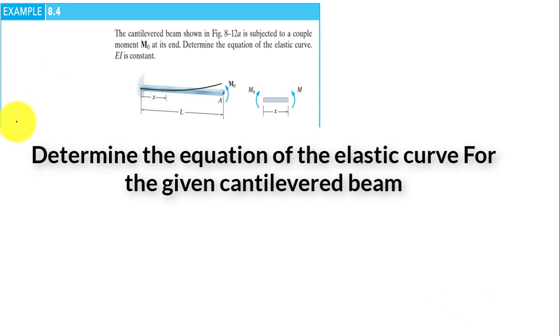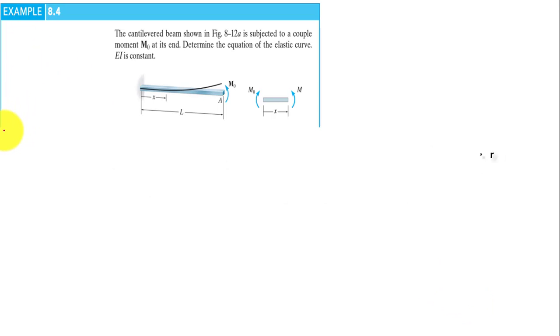Hello everyone and welcome to a new example in determining the deflection and the equation of the elastic curve. In this example we have a cantilever beam subjected to a couple moment M0 at its end and we have to determine the equation of the elastic curve for this beam. EI is constant. We start our solution.